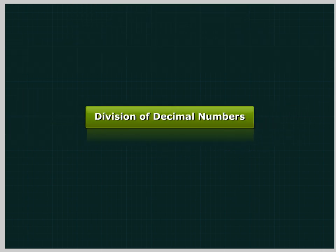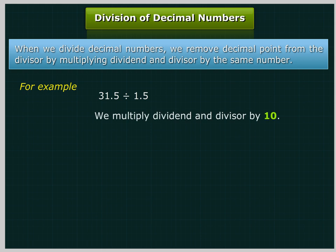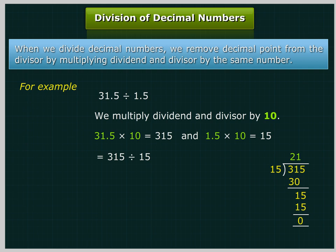Division of decimal numbers: When we divide decimal numbers, we remove the decimal point from the divisor by multiplying the dividend and divisor by the same number. For example, 31.5 divided by 1.5 — we multiply dividend and divisor by 10. 31.5 multiplied by 10 is equal to 315, and 1.5 multiplied by 10 is equal to 15. So 315 divided by 15 is equal to 21.